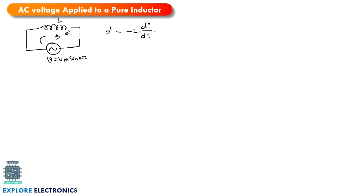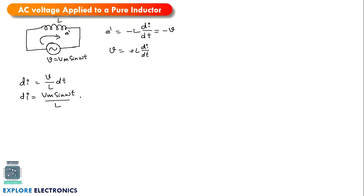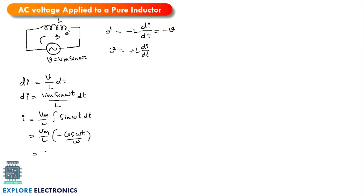Comparing the induced EMF with our input, we get V = L di/dt. From this, di = (V/L) dt, so i = ∫(Vm sin(ωt) / L) dt. Since Vm/L is a constant, integrating sin(ωt) with respect to t gives -cos(ωt) / ω, so i = (Vm / L) × (-cos(ωt) / ω).